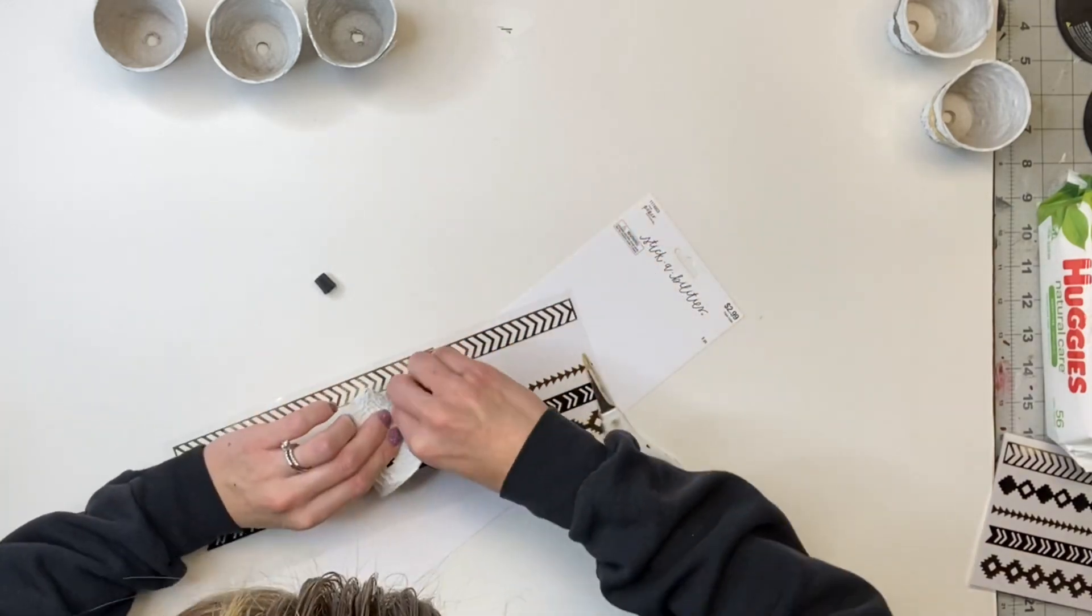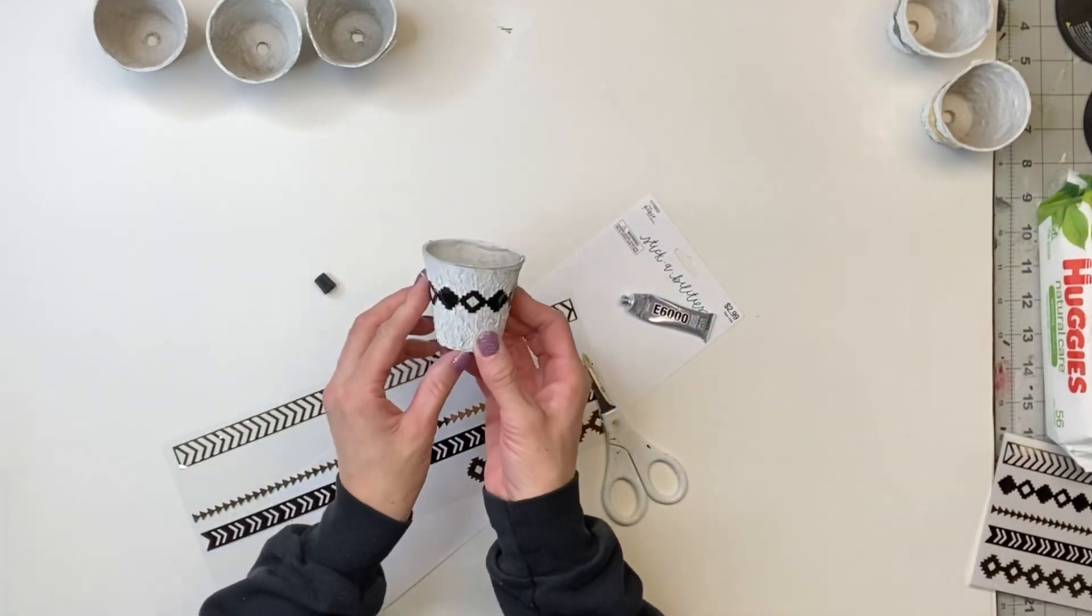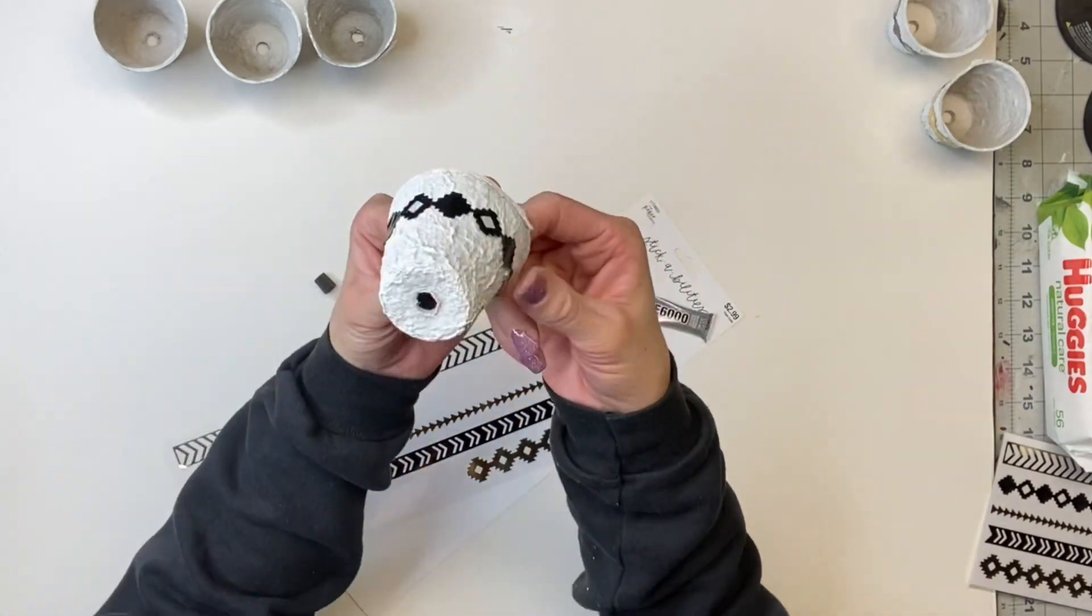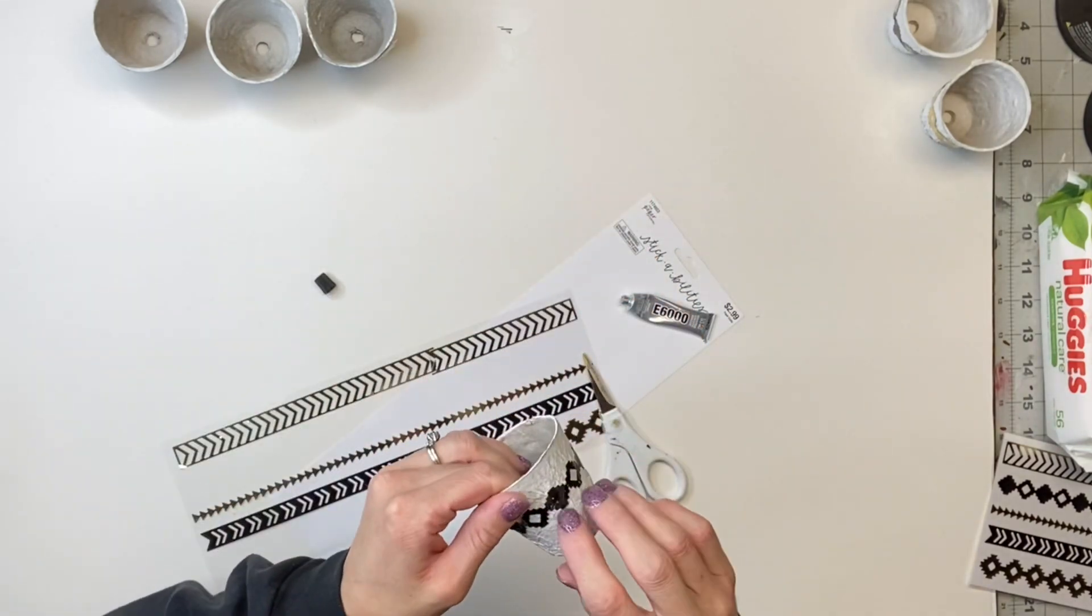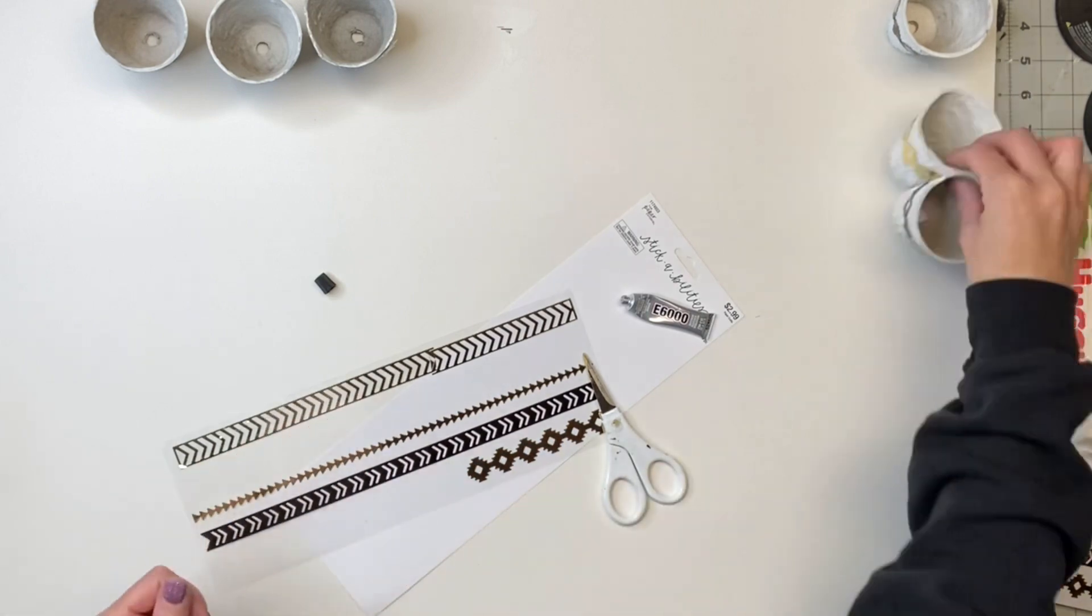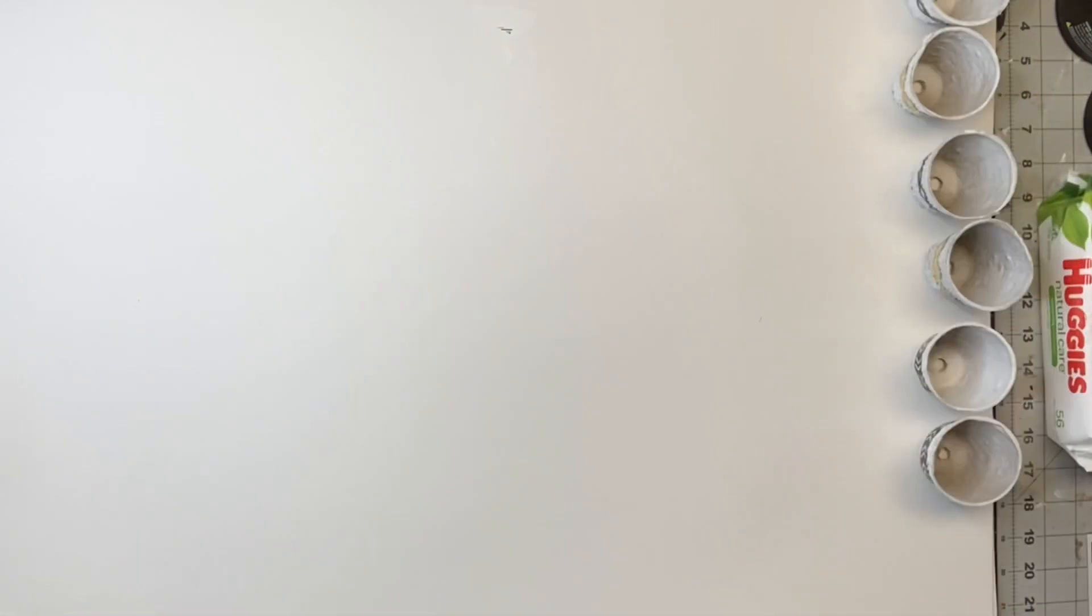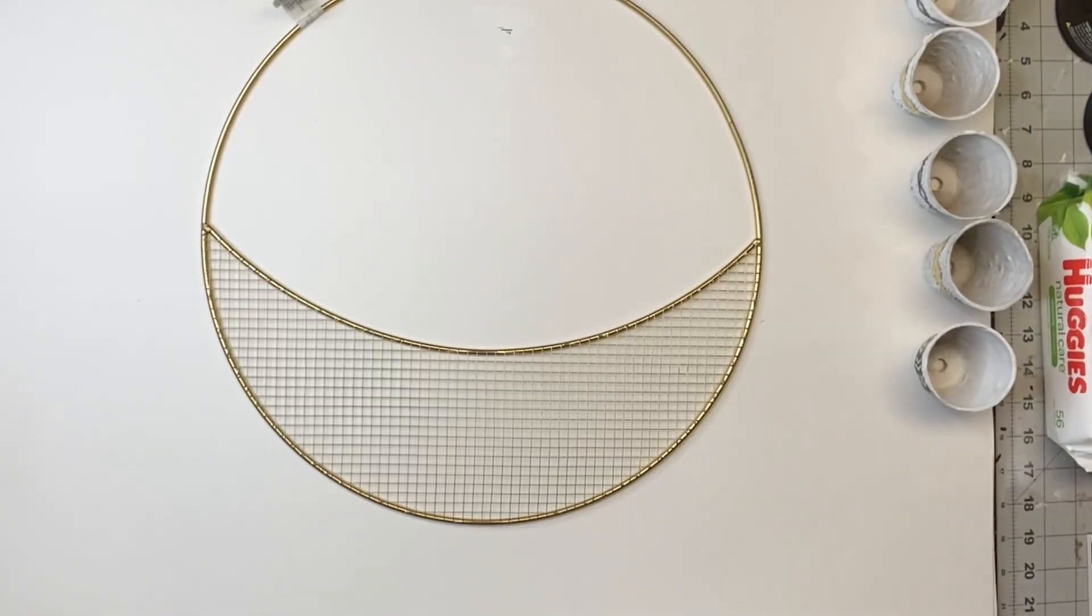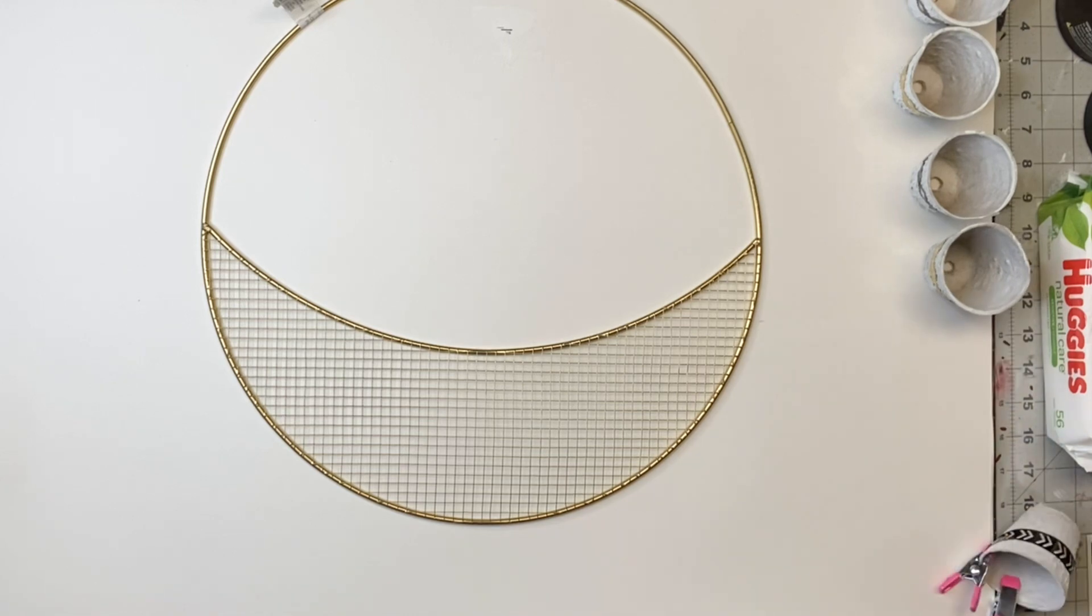And I'm just eyeing and going down about a half an inch on my pot. And I repeated that until all five of the pots had a sticker wrapped around them.